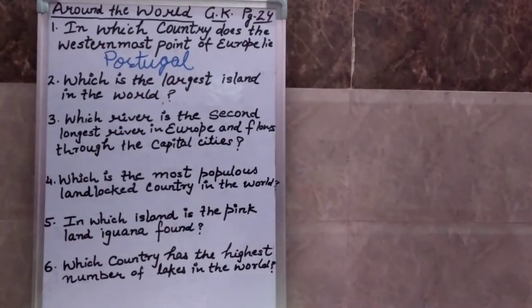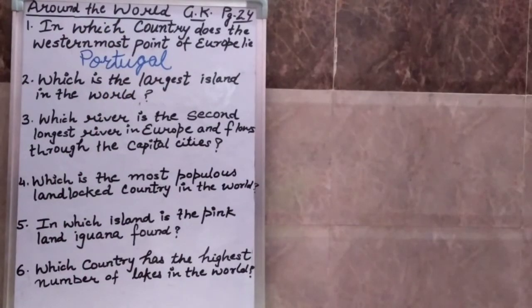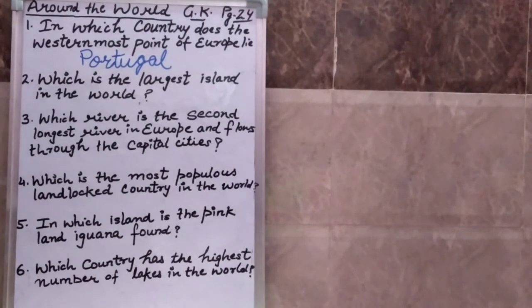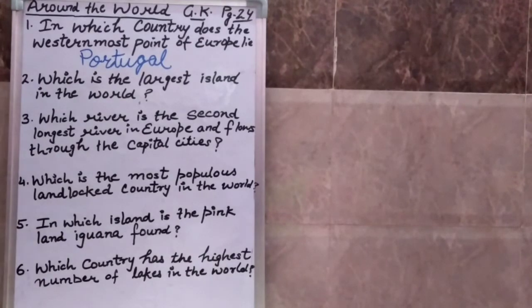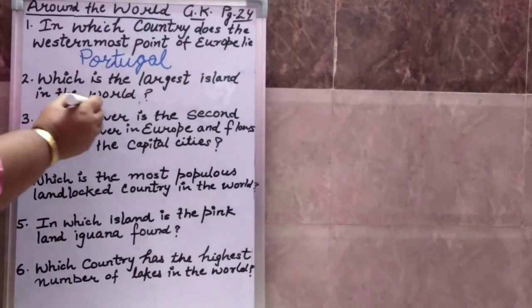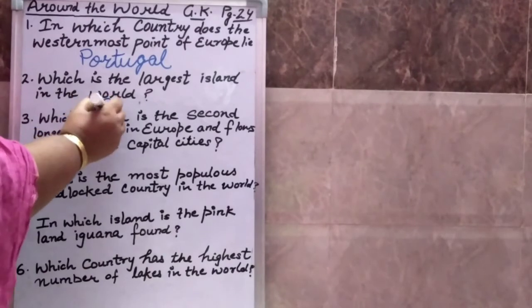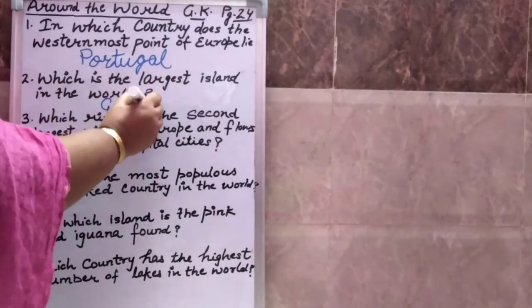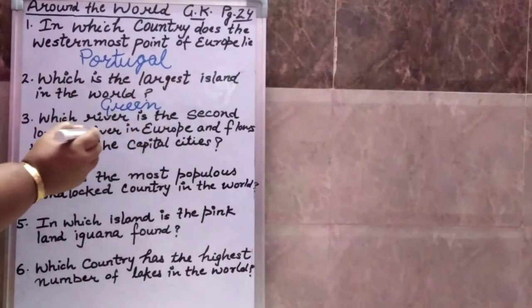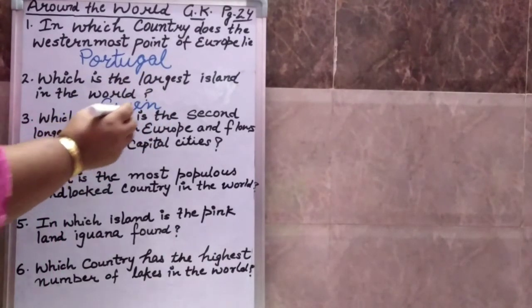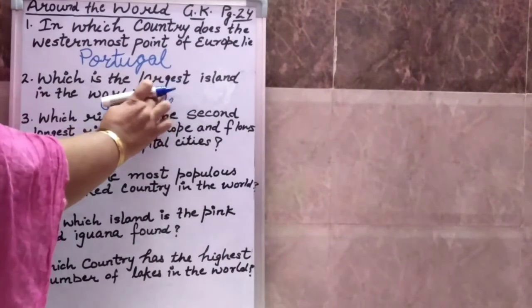Question number two: Which is the largest island in the world? Vishwa ka sabse bada island, means dweep, koun sa hai? Your answer is Greenland.